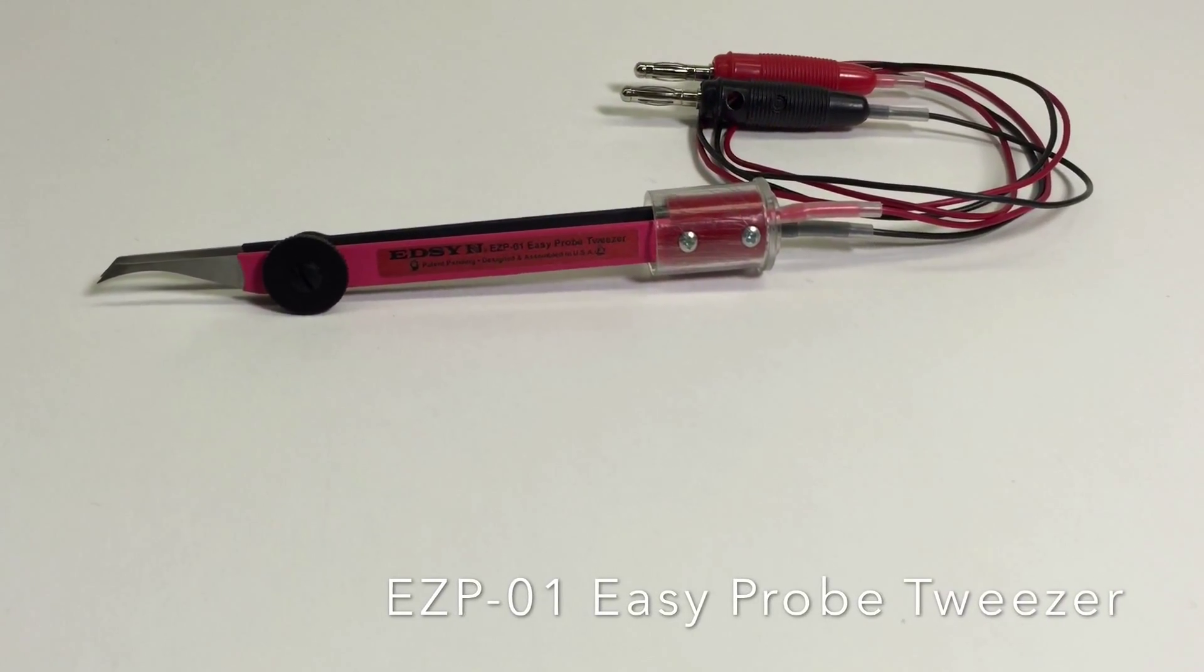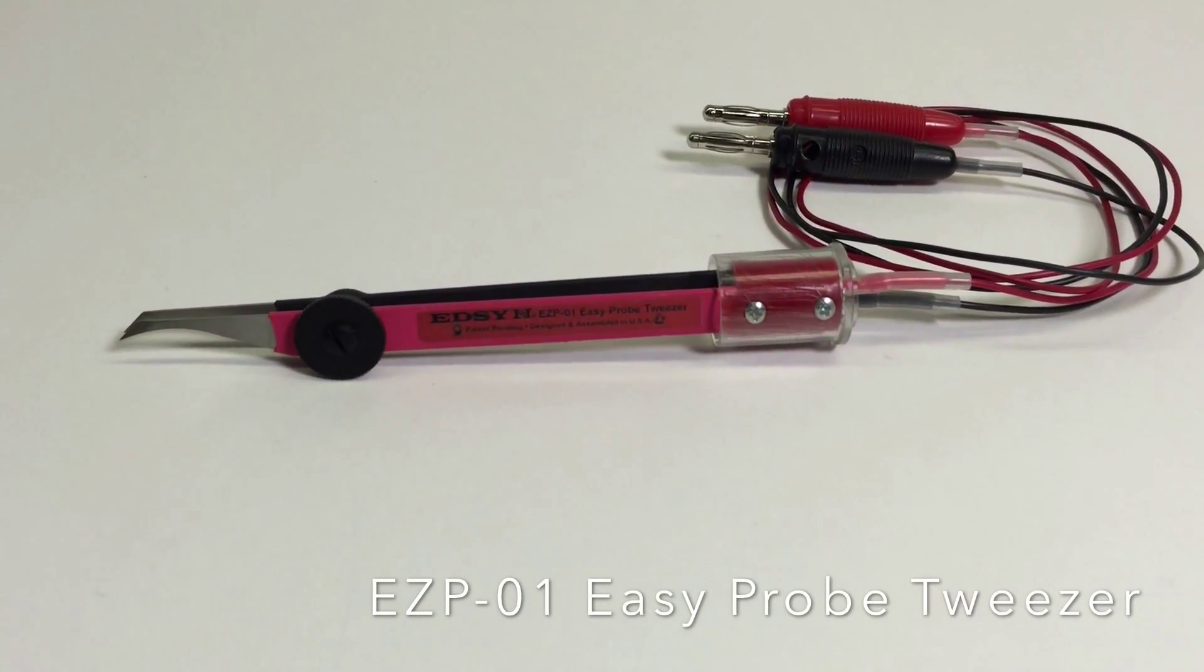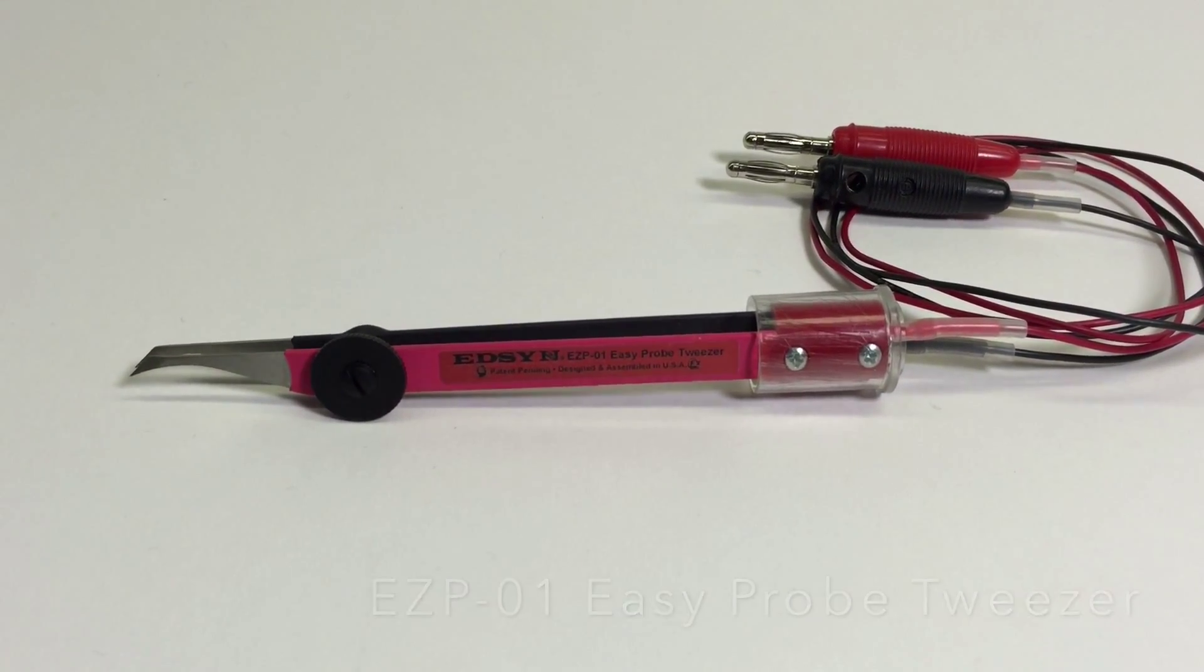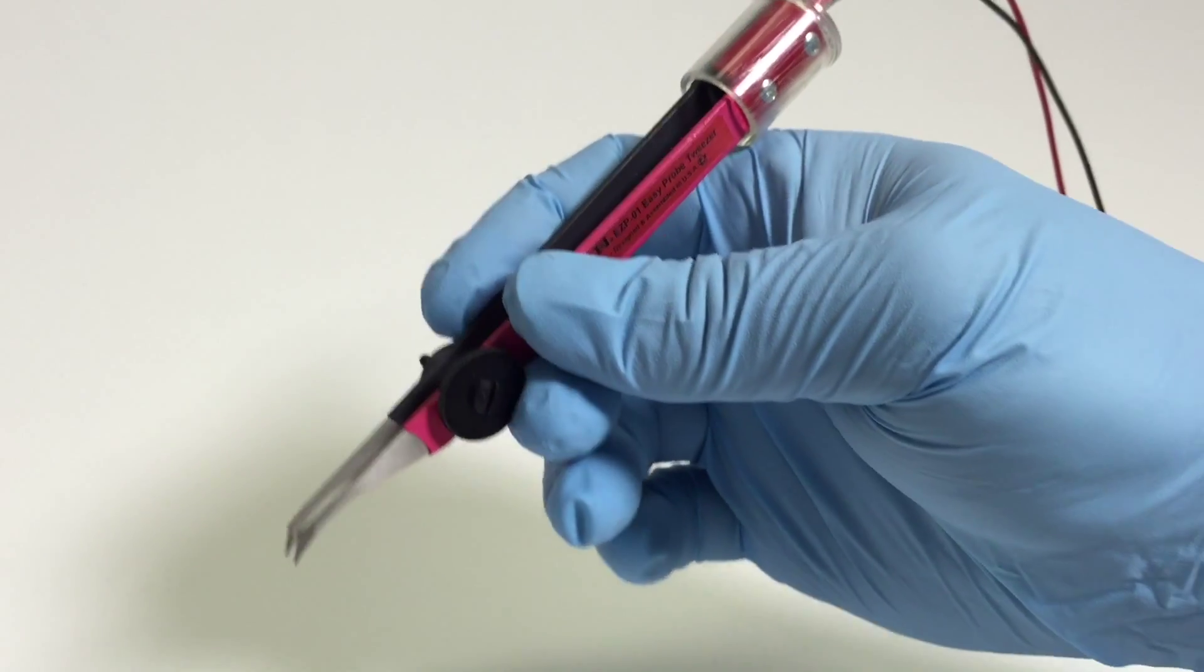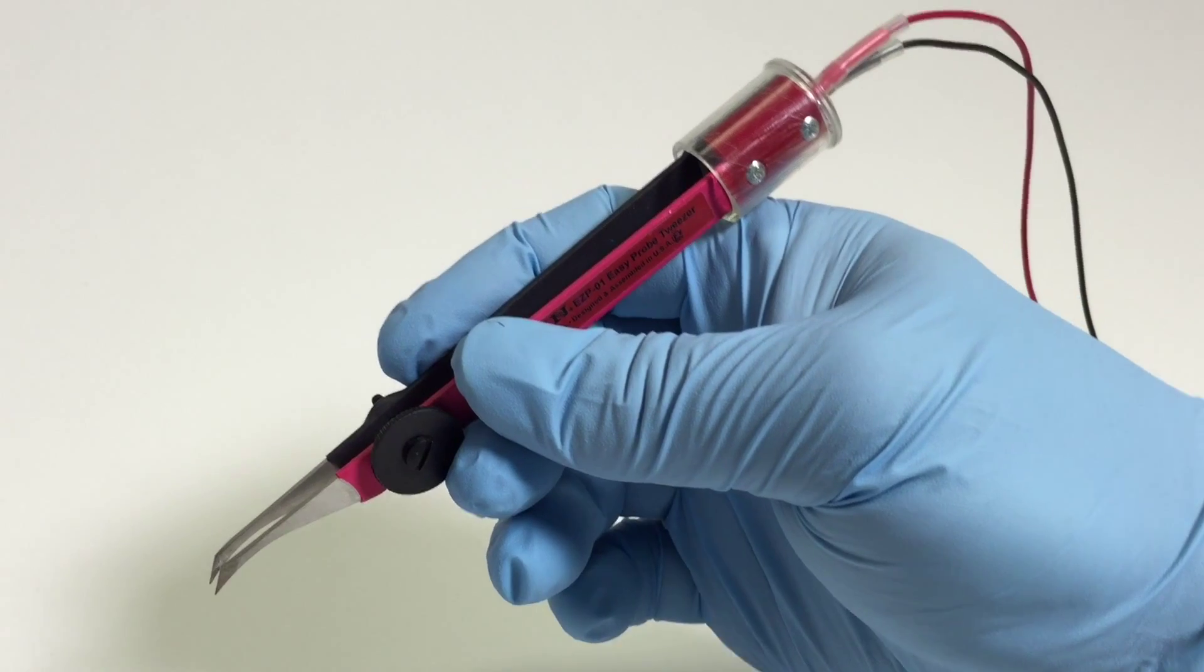This is the EZP-01, an easy probe tweezer that allows use of your test equipment with the ability to do more than the simple open and closing motion of a tweezer.